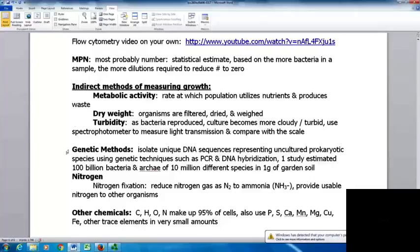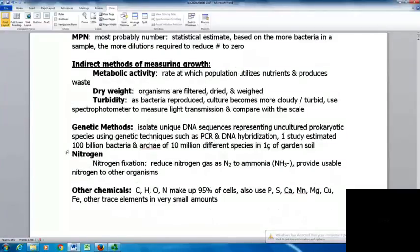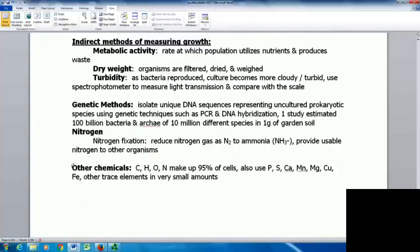With genetic methods, you can isolate unique DNA sequences that represent uncultured prokaryotic species using genetic sequences. You would use things like PCR and DNA hybridization. One study estimated 100 billion bacteria in archaea of 10 million different species in just one gram of garden soil. We can look at nitrogen levels with nitrogen fixation - nitrogen gas is reduced to ammonia, providing usable nitrogen to other organisms. We can look at other chemicals as well.